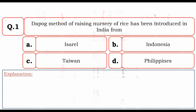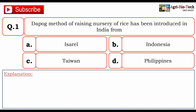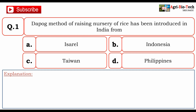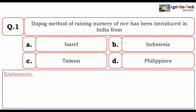Our first question is: DAPOG method of raising nursery of rice has been introduced in India from? The given options are A. Israel, B. Indonesia, C. Taiwan, D. Philippines.